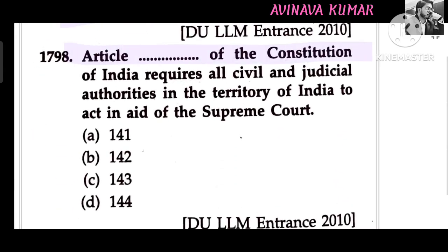Which article of the Constitution of India requires all civil and judicial authority in the territory of India to act in aid of the Supreme Court? Answer: Article 144.